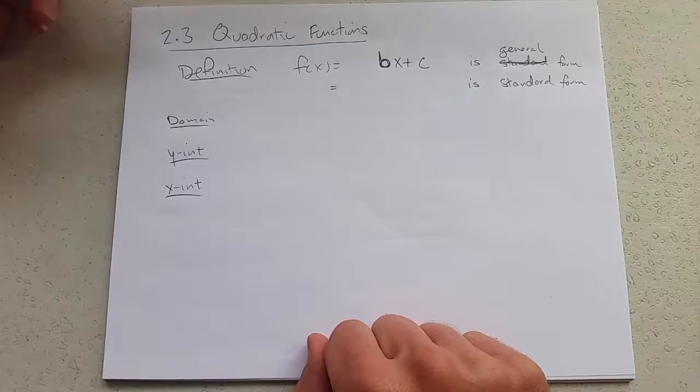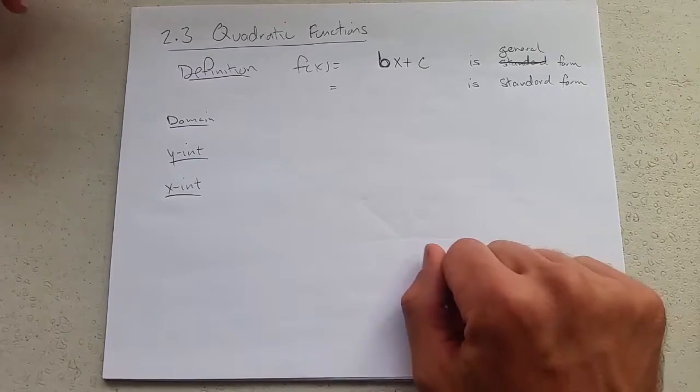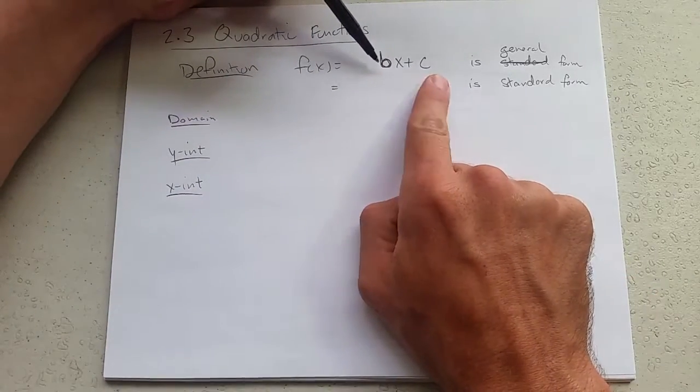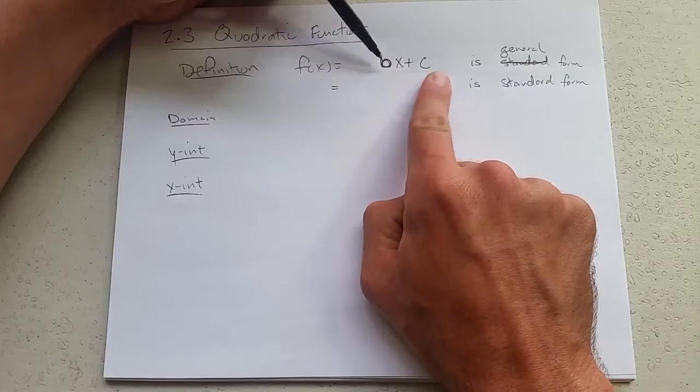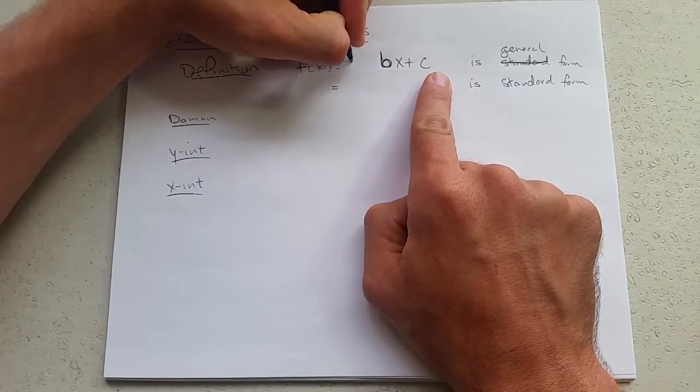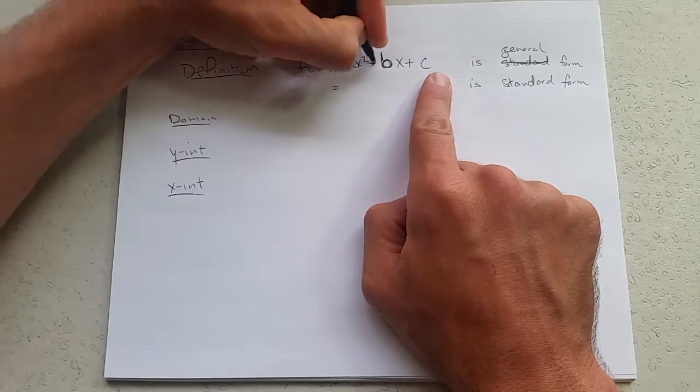Quadratic functions. We get to do some more interesting algebra. So what is a quadratic function? A linear function is x times a number plus another number. Quadratic is different because it has an x squared term.